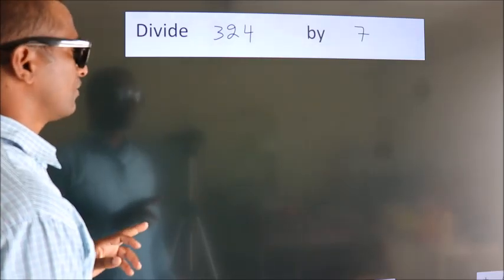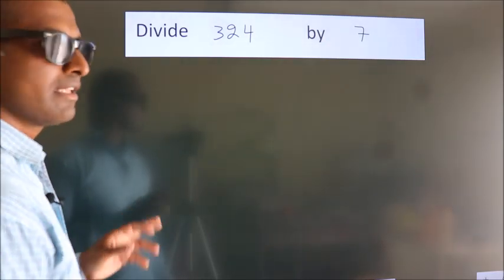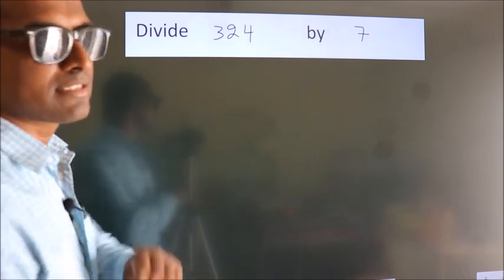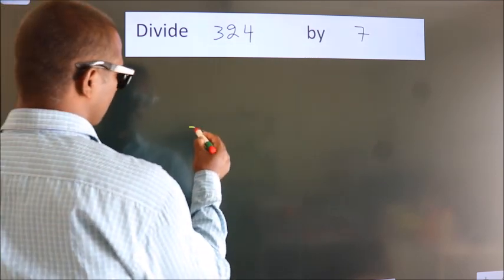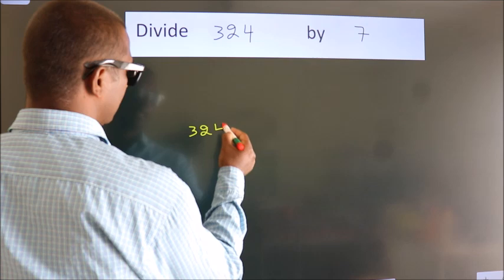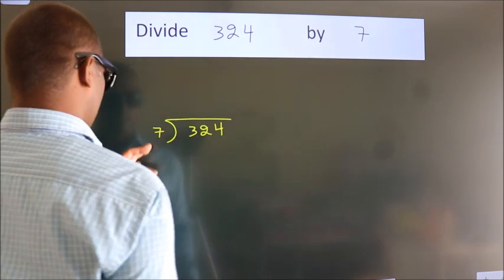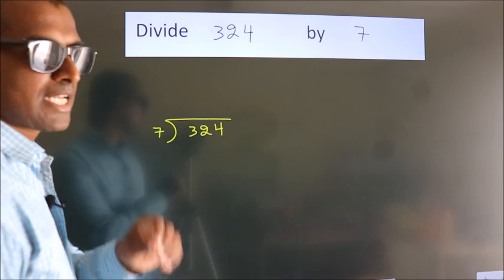Divide 324 by 7. To do this division, we should frame it in this way: 324 here, 7 here. This is your step 1.